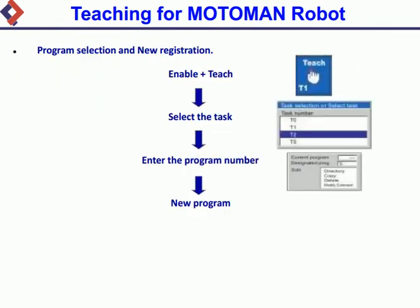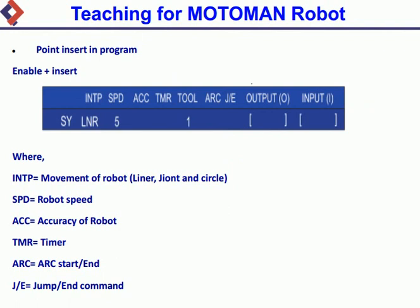Point insert in program: Enable and Insert. INTP equals movement of robot — linear, joint, and circle. SPD equals robot speed. ACC equals accuracy of robot. TMR equals timer. Arc equals arc start/end. J/E equals jump/end command.